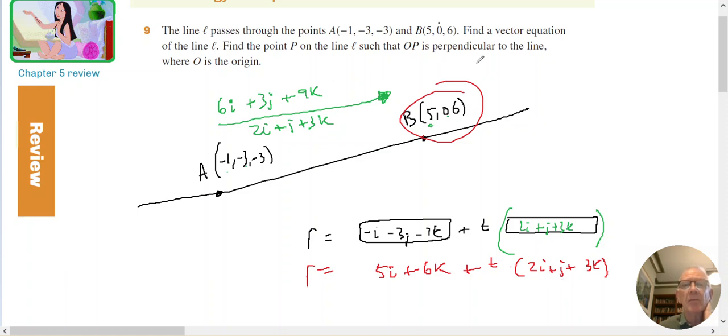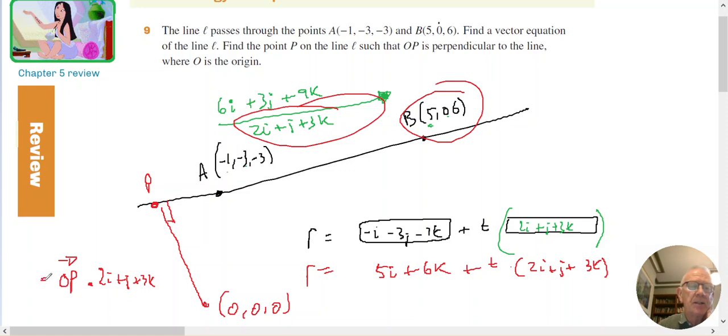Find a point P on the line so that OP is perpendicular to the line. So find a point on the line P so that 0, 0, 0 to P is at right angles. So if I could get a vector for OP and do the dot product with this, the direction of the line, 2I plus J plus 3K, I'd like to set that equal to 0 and solve for T.